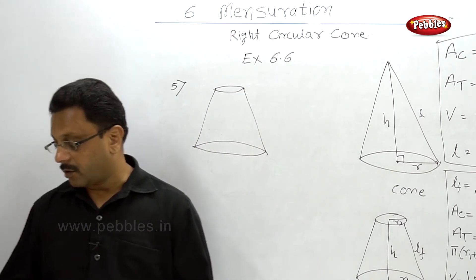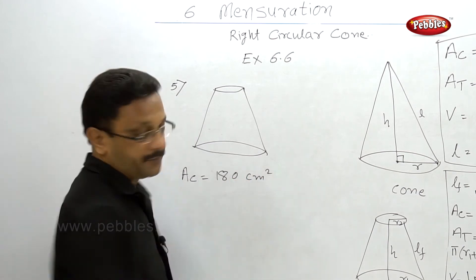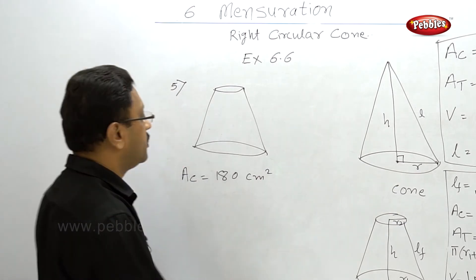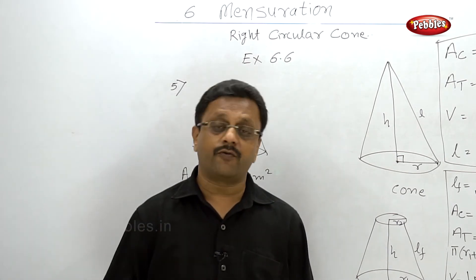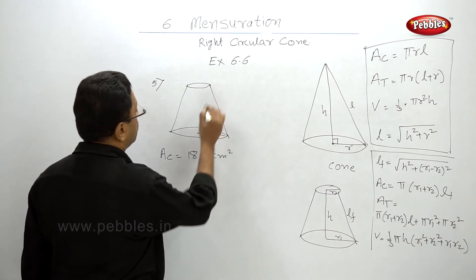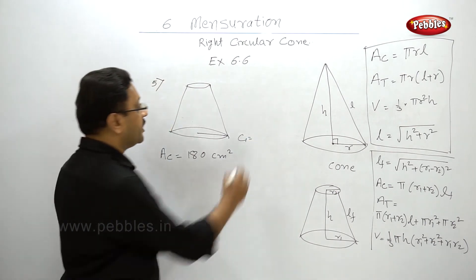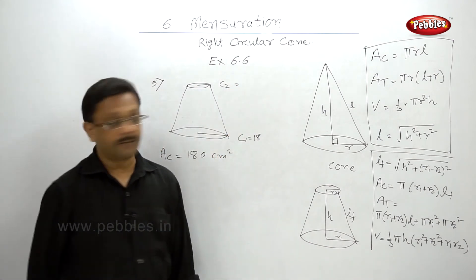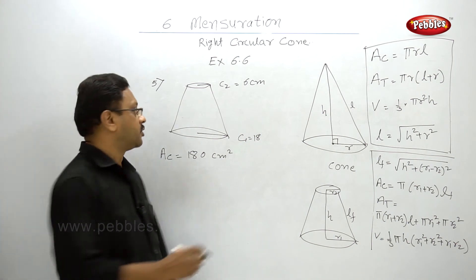The fifth example: the curved surface area of a frustum of a cone is 180 cm². The circumferences of its circular bases are 18 and 6 centimeters. From the circumferences you have to find out the radii. Circumference C1 is 18 cm and C2 is 6 cm. You have to find out the slant height of the frustum.